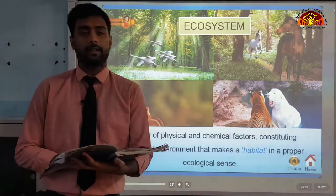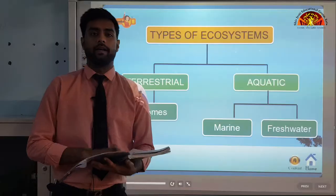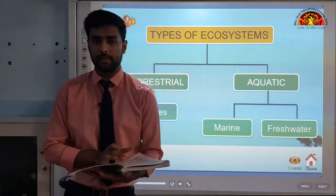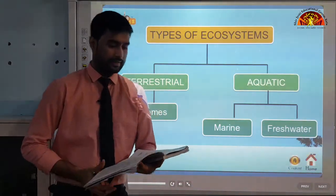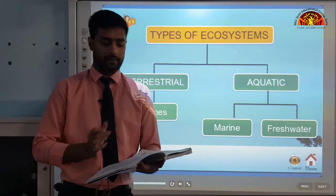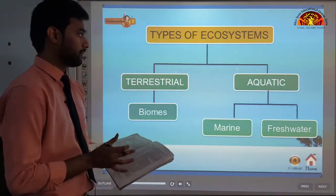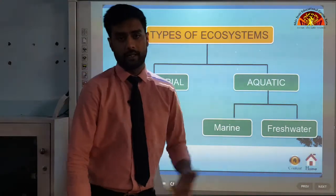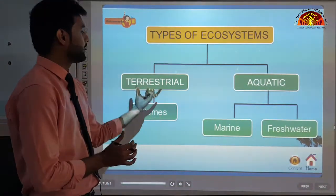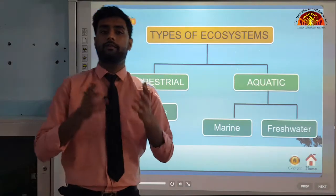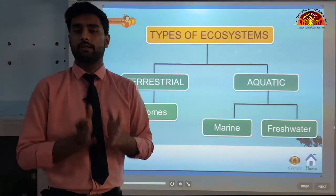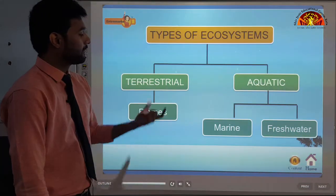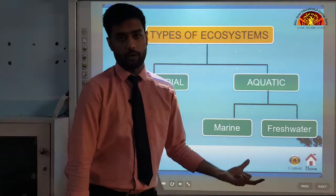Now our next topic is types of ecosystem. We classify the ecosystems of Earth broadly into two parts: terrestrial and aquatic. Terrestrial means land, aquatic means water. They are further classified into biomes and marine and freshwater systems.